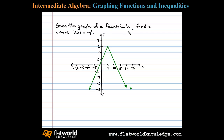Given the graph of a function h, find x where h of x equals negative 4. To answer this question we have to be familiar with function notation. h of x equals y. Here we're trying to find x where h of x equals negative 4 — in other words, find x when y is equal to negative 4.